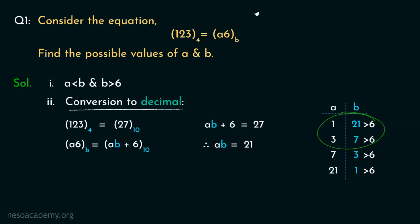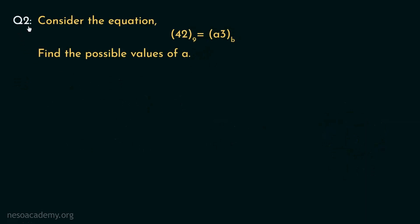Let's observe another question of this type, shall we? Observe this question. Consider the equation (42)₉ = (a3)ᵦ. Now, we are to find out the possible values of only a. So, let's solve this. Similar to the previous problem, let's determine the conditions from the right hand side. So, a should be less than b and b should be greater than 3. Now, let's perform the conversions to decimal.